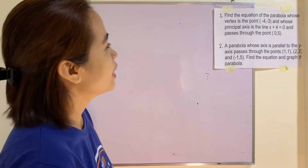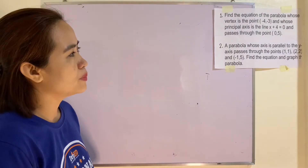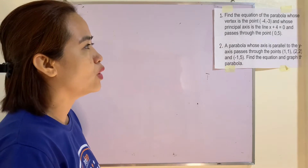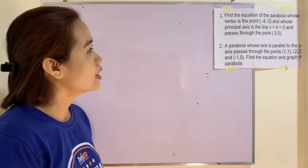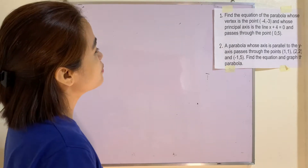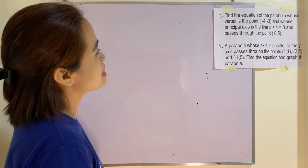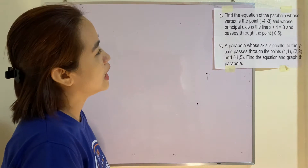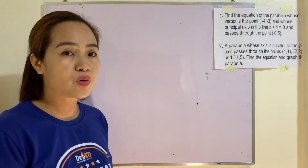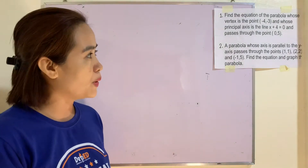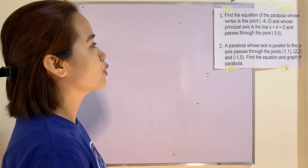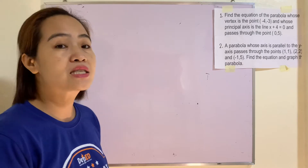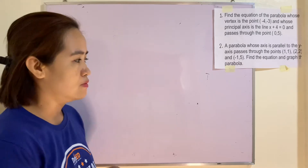Example 1: Find the equation of the parabola whose vertex is the point (-4, -3) and whose principal axis is the line x + 4 = 0, and which passes through the point (0, 5).